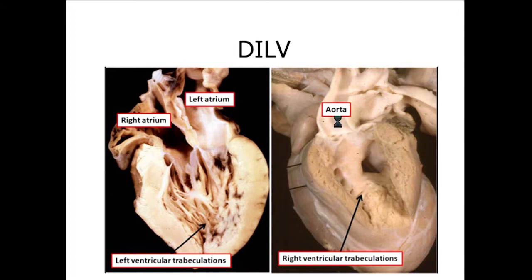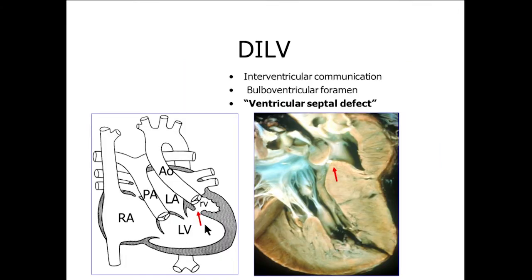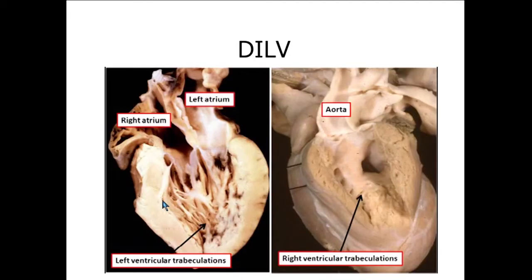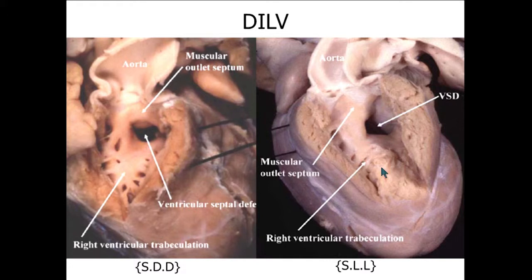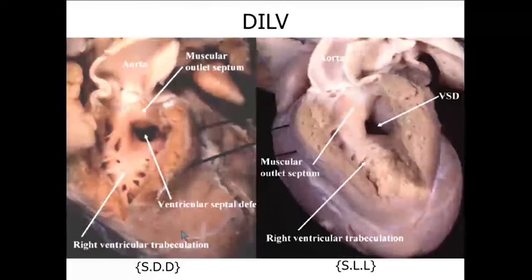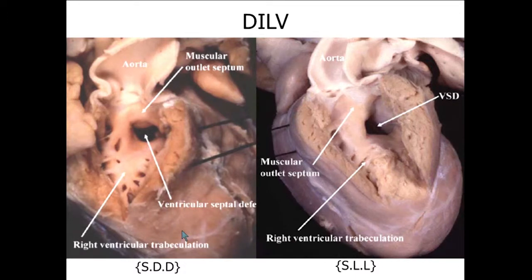In typical double inlet left ventricle, the VSD communicates the two chambers, and the VA connection is discordant — RV to aorta, LV to pulmonary artery. So DILV with VSD, small right ventricular chamber, and VA discordance is the typical anatomic nature. The rudimentary chamber can be left anterior or right anterior morphological right ventricle — so-called L-loop or D-loop ventricular loop, representing left-handed or right-handed ventricular topology.